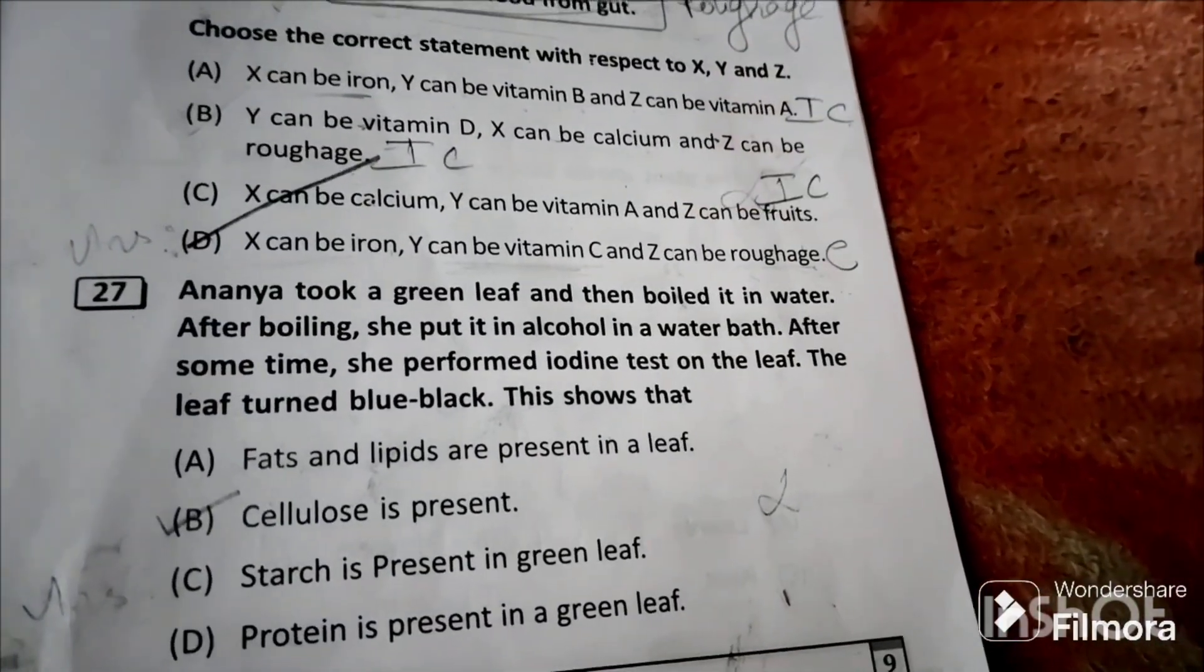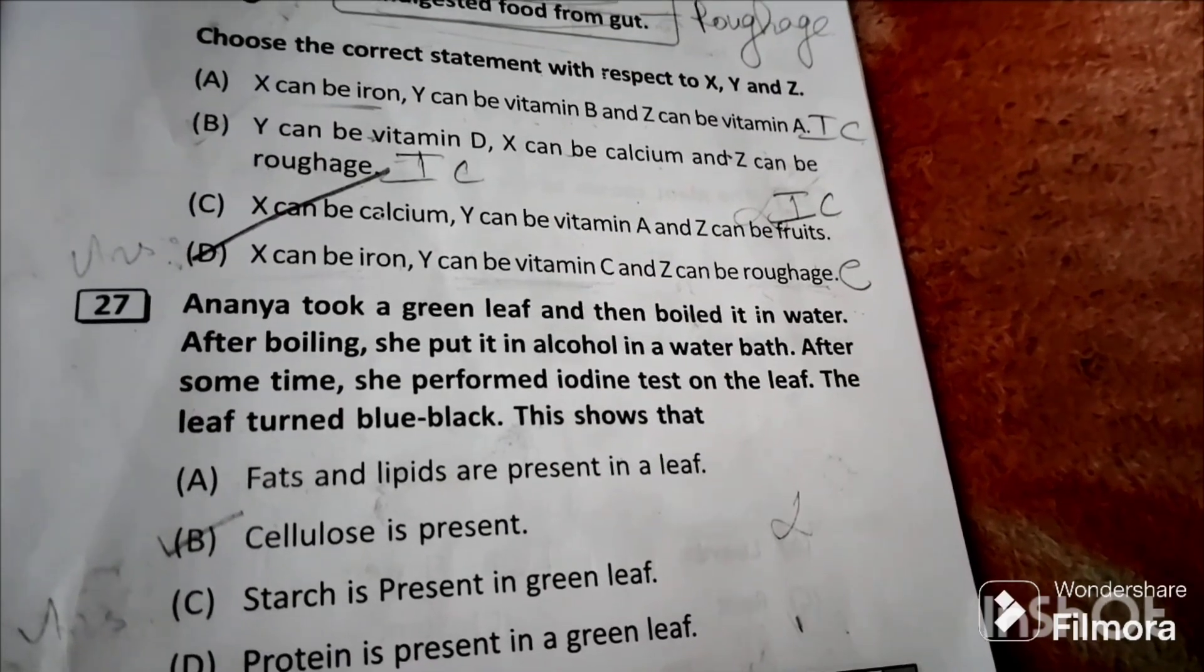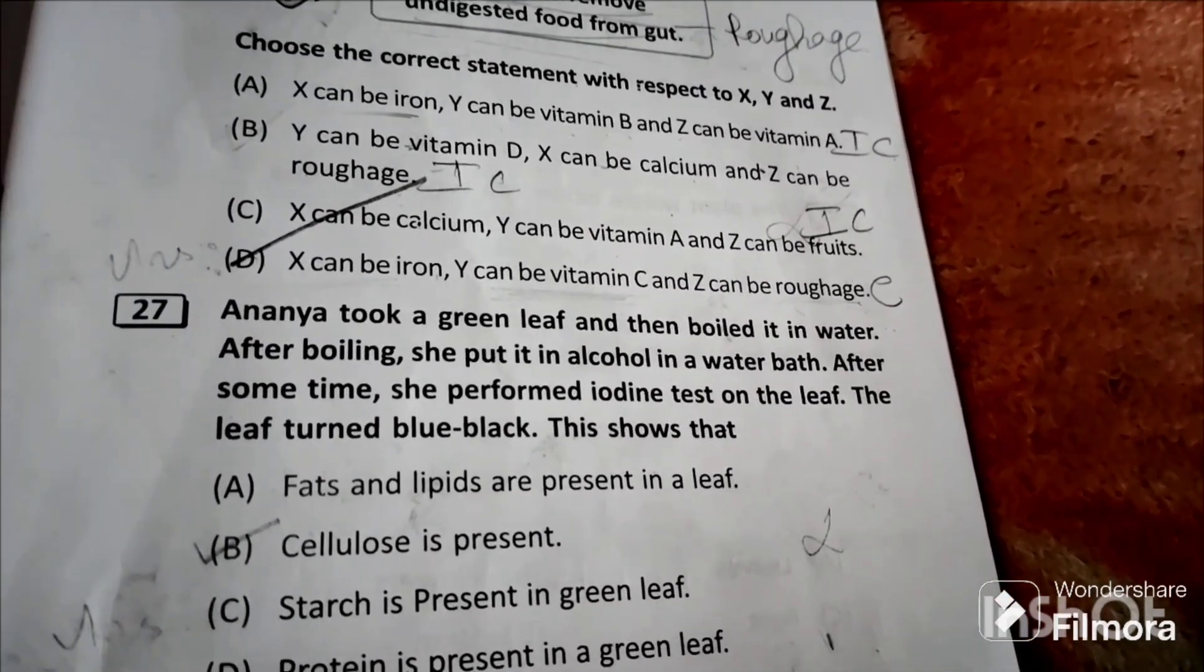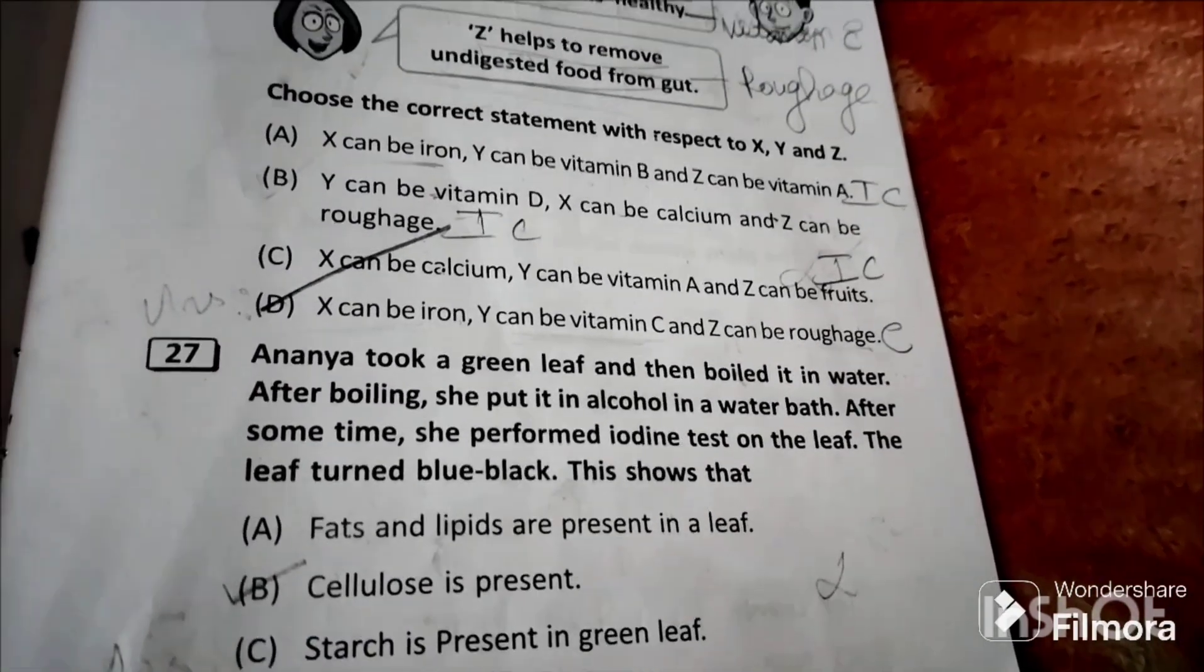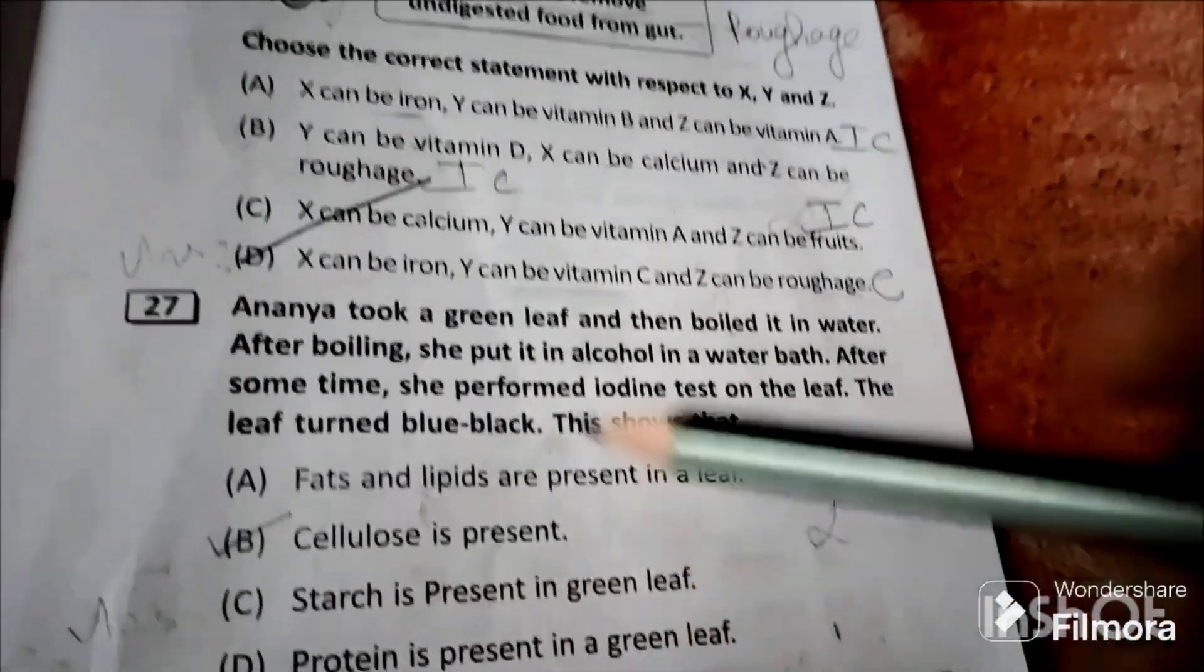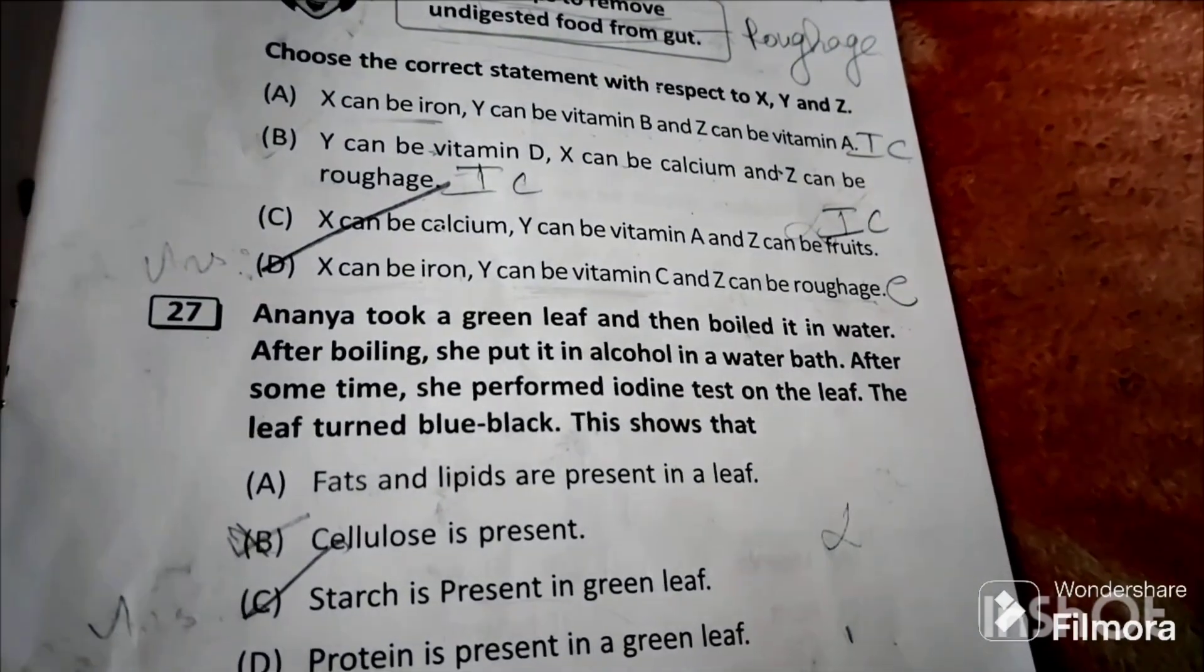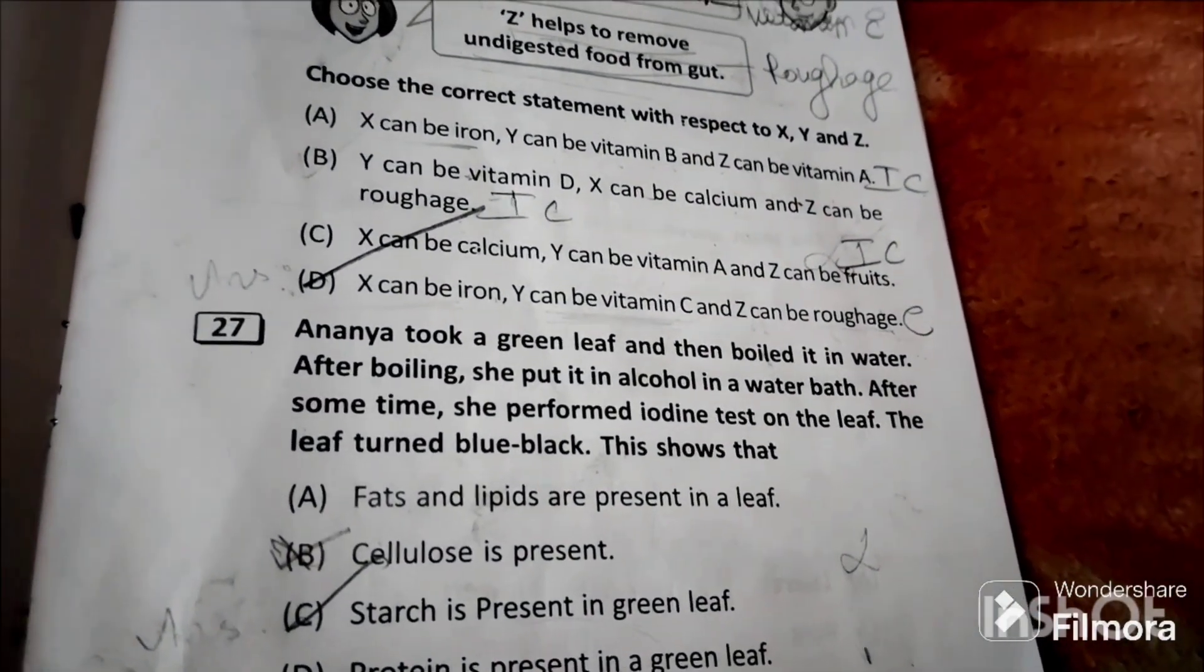Question 27: Ananya took a green leaf and then boiled it in water. After boiling she put it in alcohol in a water bath. After some time she performed iodine test on the leaf. The leaf turned blue black. This shows that starch is present in green leaf because starch is responsible for the green leaf turning into blue black.